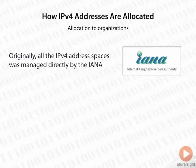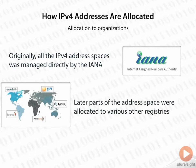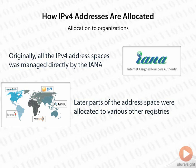Now regarding allocation to an organization: originally all address spaces were managed directly by IANA — the Internet Assigned Numbers Authority. Later, portions of that address space were allocated to other registries. Early on, addresses were allocated directly to organizations. Later, blocks were allocated to different registries, and those registries could then allocate to service providers, who in turn allocated to customers.